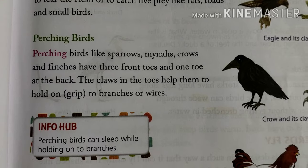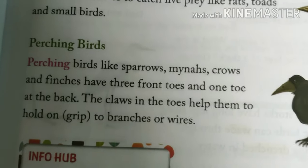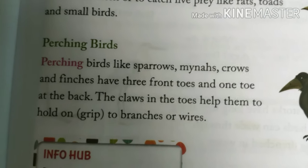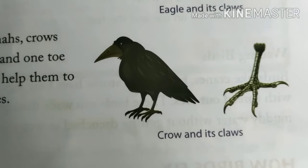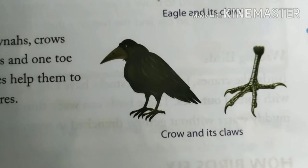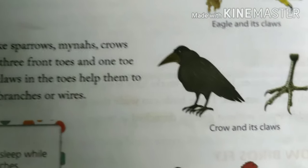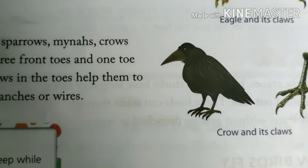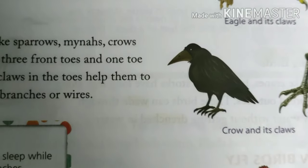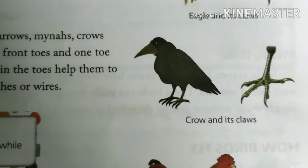Next we have perching birds. Birds like crow, sparrow, myna, and finches have three front toes and one toe at the back. This helps them to grip and hold onto branches and also on wires. As you may have noticed, crows usually sit on electrical wires or branches — these claws help them grip and hold.